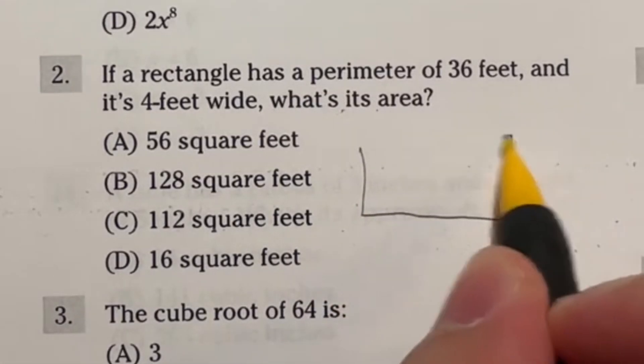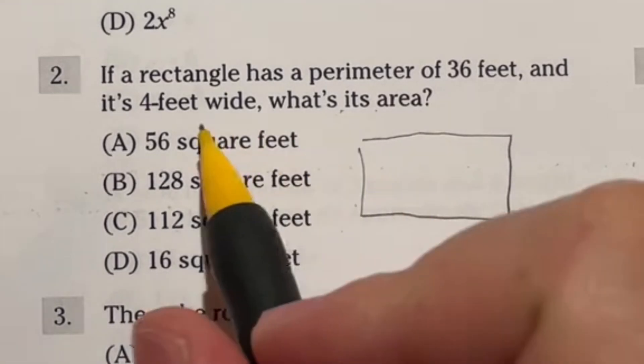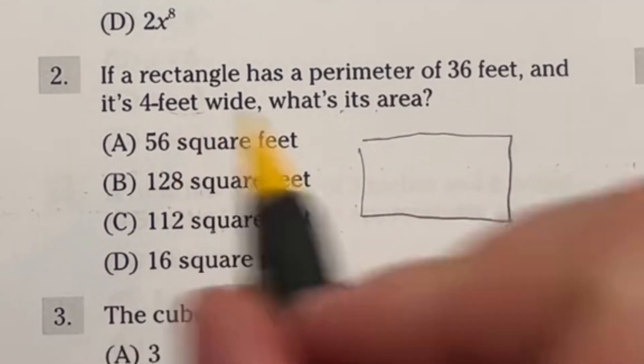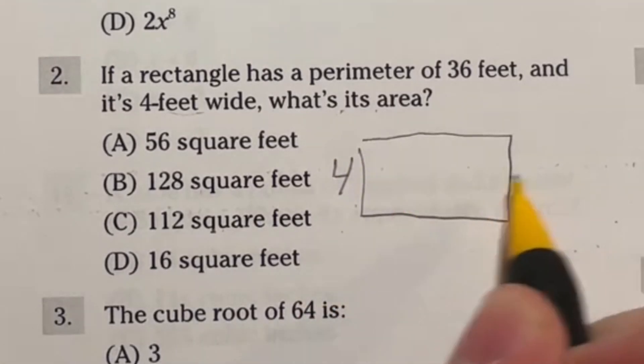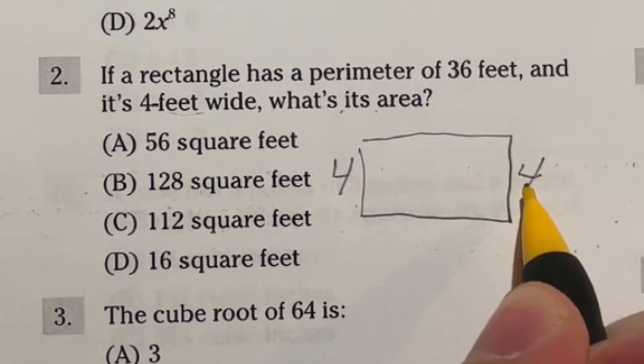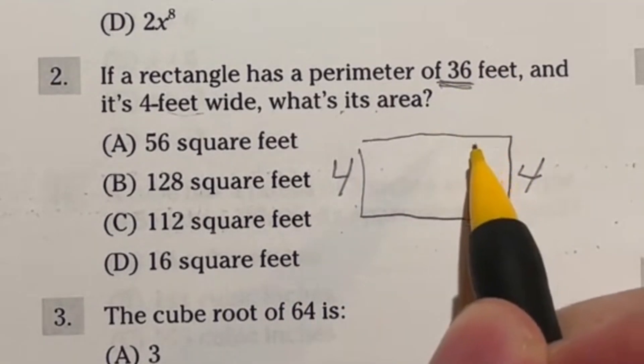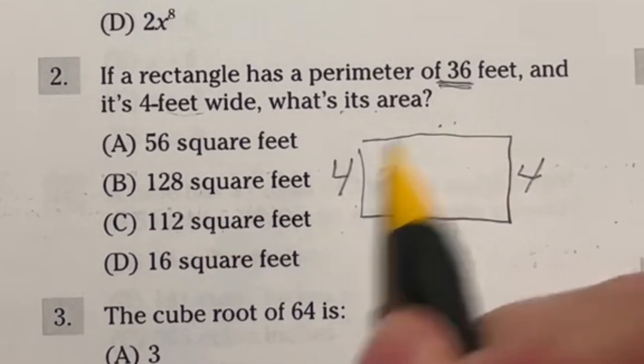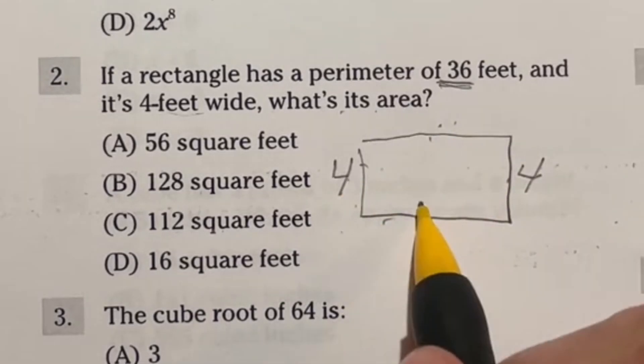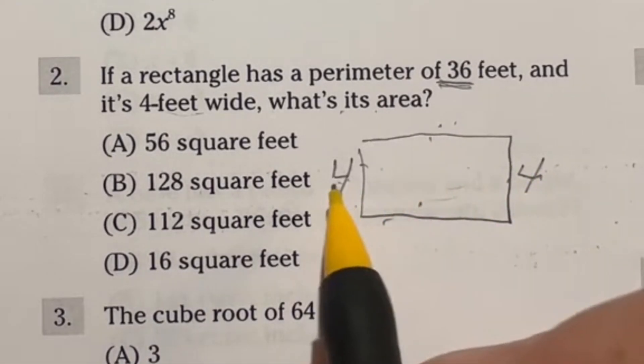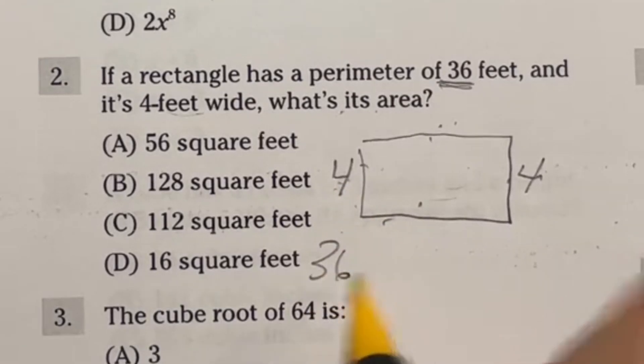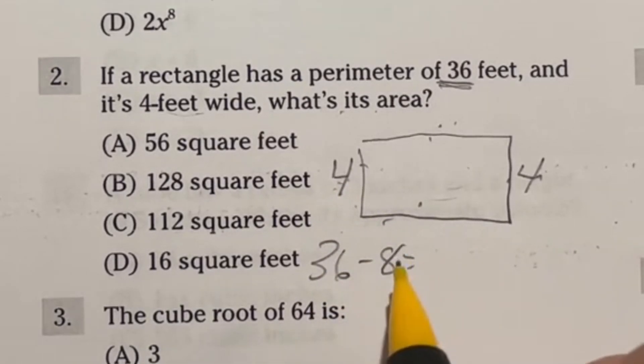We have a rectangle here and it says that it is four feet wide. So we're looking at like four feet here, which means that this guy is going to be four as well. All right. Now it does tell us it has a perimeter of 36. Now what is perimeter? Perimeter is when you take all four sides and add them together. Well, we don't know what that is yet, but we do know that we have eight so far. So 36 minus eight will tell us how much we have left to go. So if I do 36 minus eight, that's going to end up giving me 28.